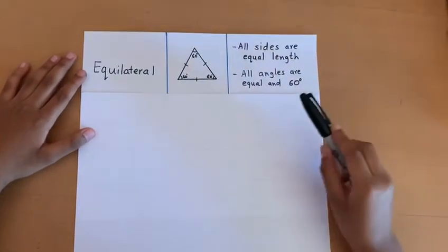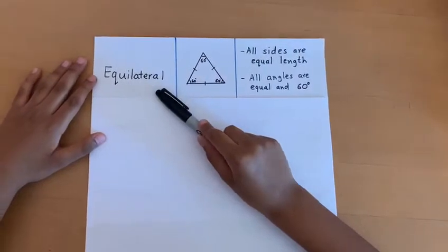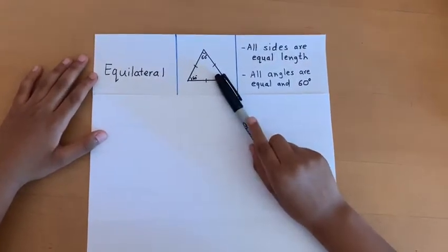Our first triangle is the equilateral triangle. This is what an equilateral triangle looks like.